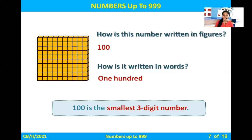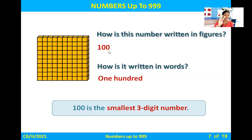We write ninety-nine — ninety-nine has two digits. After ninety-nine, which number do we write? One hundred. We write the number one hundred, and how many digits does this number have? It has three digits. This is the first three-digit number, which means it is the smallest three-digit number.